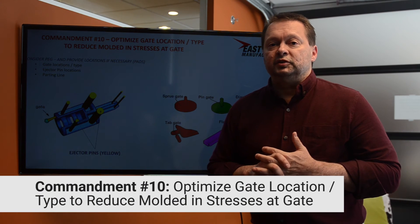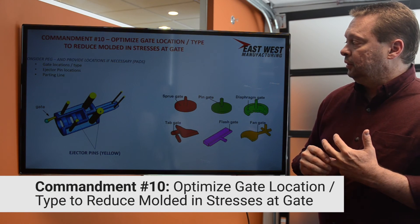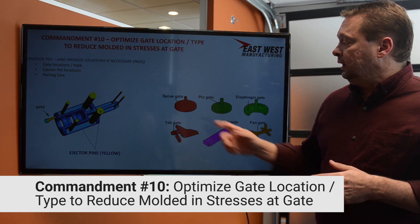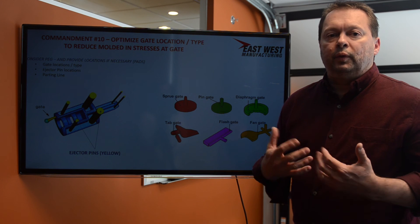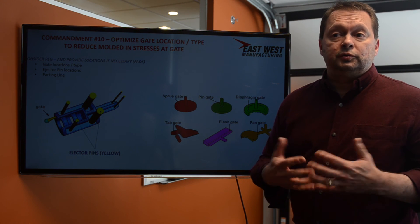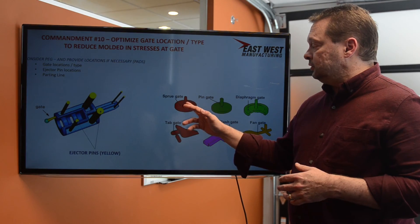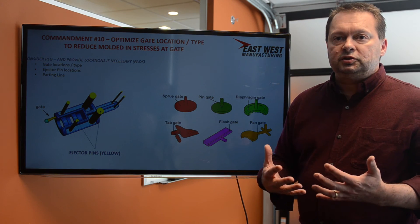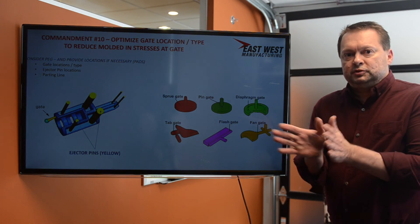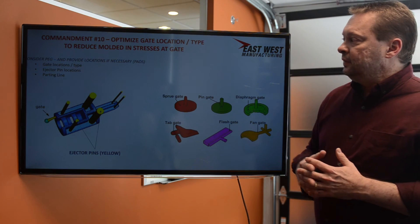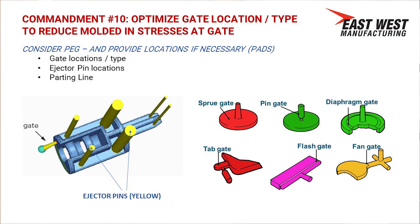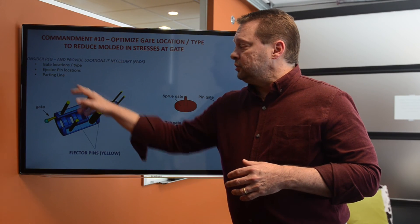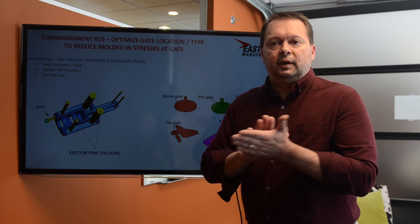Commandment number ten of injection molding is optimizing gate location. The gate is the area where material enters the mold, and there are several gate types depending on your part geometry and fill pattern. We would run mold flow analysis on a part, perhaps starting with a standard sprue gate or tab gate, and if the mold doesn't fill we might use a fan gate, which is wider and allows material to flow into the part better. You should insist that your injection molder show you the gate locations and types, the locations of the ejector pins that push the part off the mold, and the location of the parting line where the two halves of the mold separate.